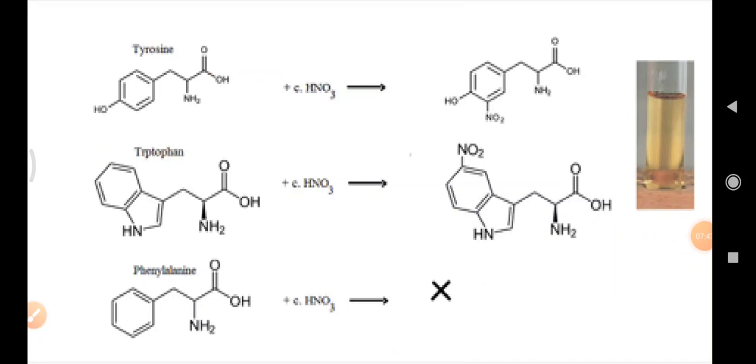So, here are three tyrosine, tryptophan and phenylalanine structures which are amino acids and containing aromatic rings. So, they can produce different colors with this xanthoprotic test.